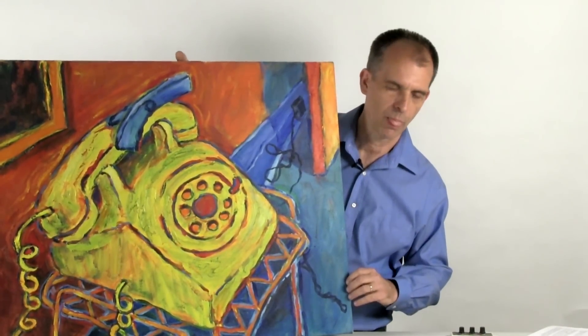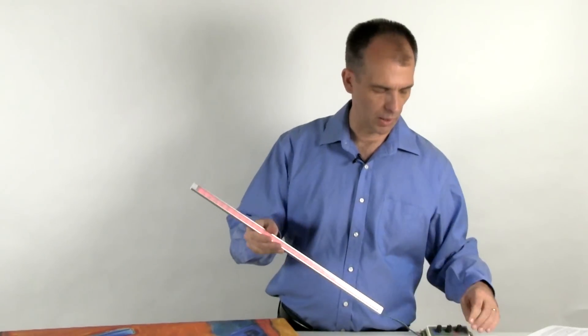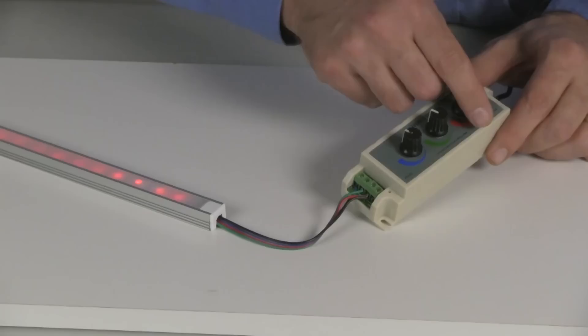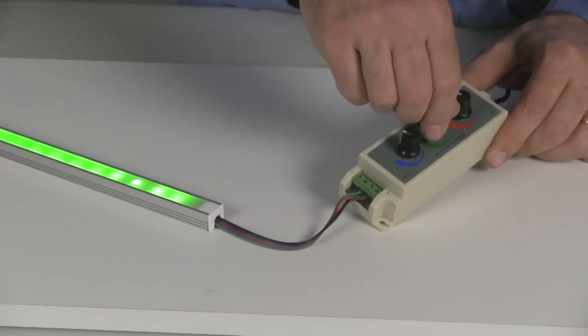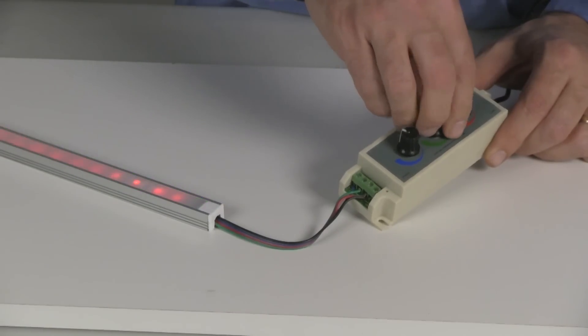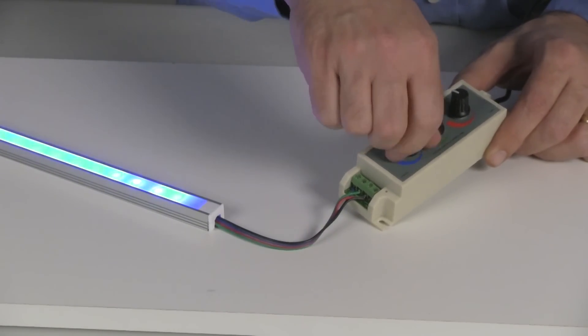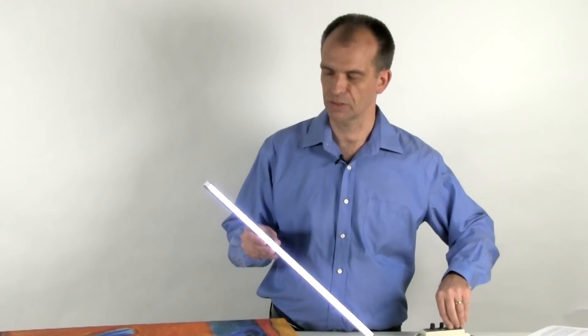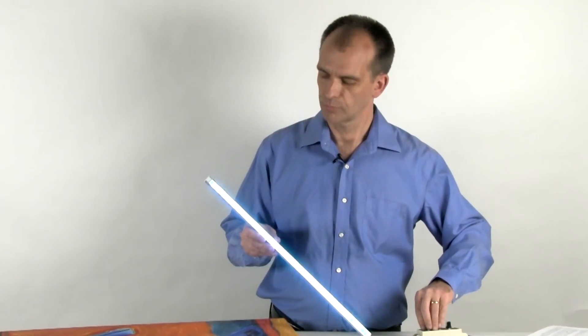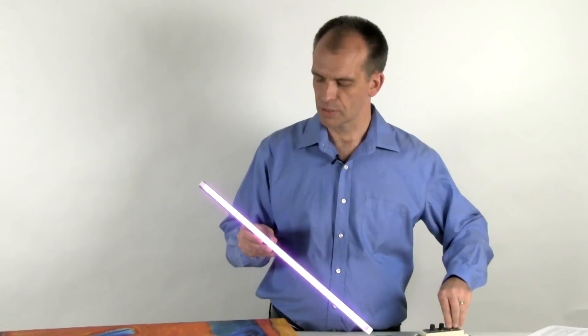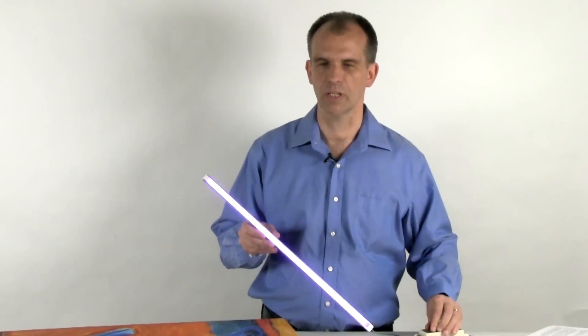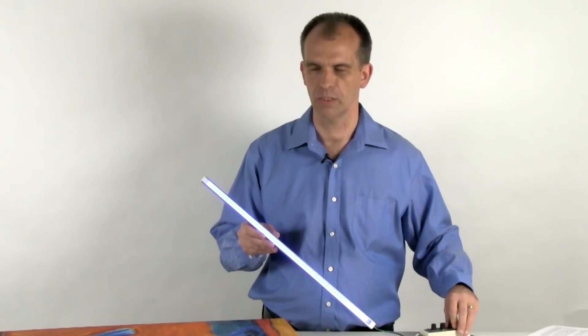I'm going to take this RGB light bar and I can control the red and the green and the blue independently. And of course you can mix them all together to get something that's kind of white, it's a bluish white.